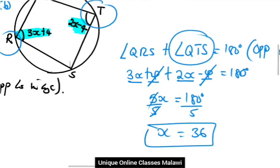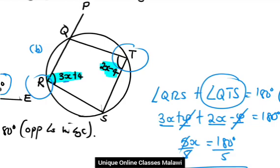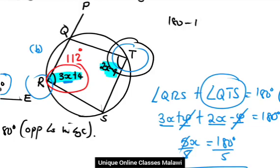The value of x is 36. So for 3x plus 4, that's 3 times 36 which is 108, plus 4, the answer is 112. So the value of this one is 112 degrees. Then for the other one, it will be 180 minus 112.